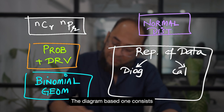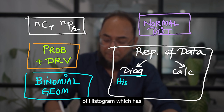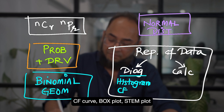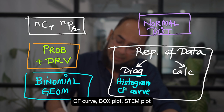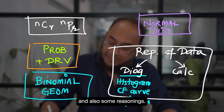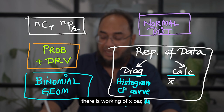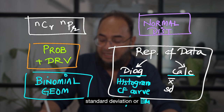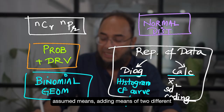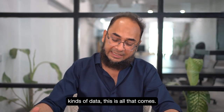Jo diagram based hai, uske andar aapke paas aata hai histogram, CF curve, box plot, step plot, aur kuch reasonings aati hain. Calculation mein kya aata hai? Calculation mein text part ki working, standard deviation ya variance ki working, coding, assumed mean, aur do qism ke data ki means ko combine karna — yeh saari cheezein hain.